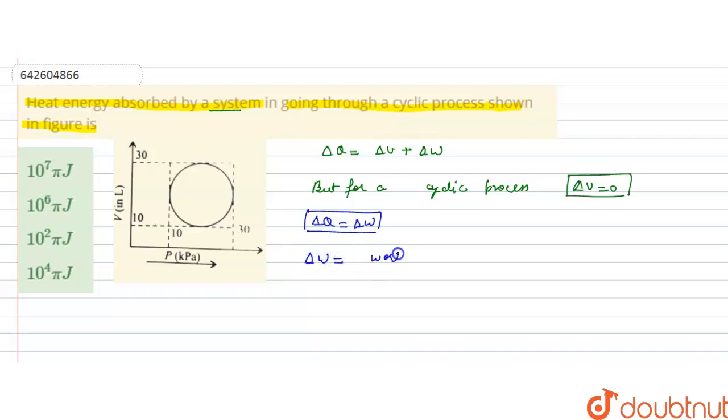Delta W, that is, work done will be equal to area under the curve. Now, this area will be, the circle is given.